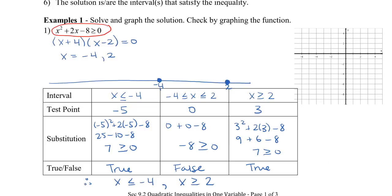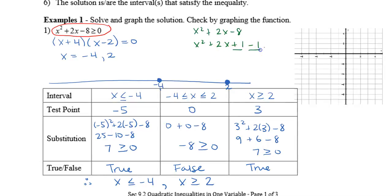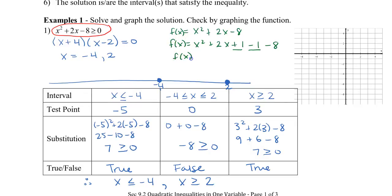Now let's review how to do this graphically. I would take x squared plus 2x minus 8 and complete the square. So I take 2x, half 2 which is 1, square 1 which is 1, and add 1 and subtract 1 to complete the square. Let's factor the first three terms — this gives me x plus 1 all squared, and then minus 1 minus 8 is negative 9. So I'm going to graph my vertex at negative 1 and negative 9. Because there's no A value in the front, I can use the ratios 1 and 1 on either side, then 2 and 4, then 3 and 9.